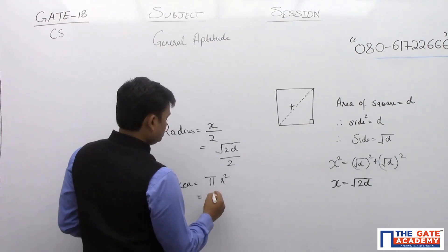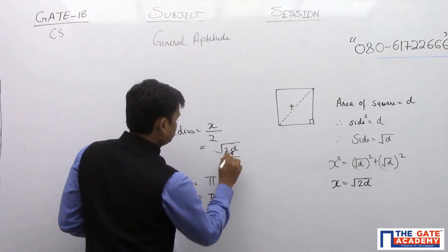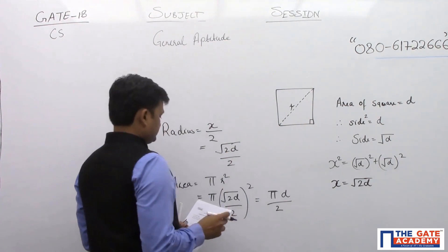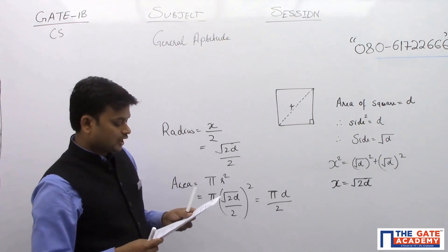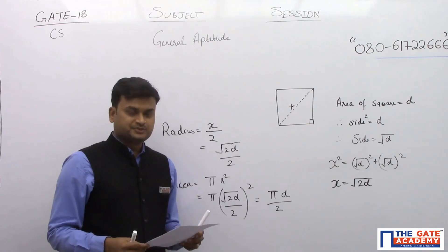So pi into this square, it will come as pi D by 2, which is your option D, which is your option D.